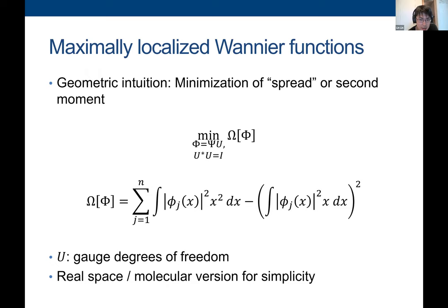Since this is an expert audience and there have been many wonderful talks in the past two days, I will directly start from the optimization problem. As we know, the maximally localized Wannier function optimizes a functional called the spread functional, denoted by omega. It is a function of the Wannier orbital phi, which is a unitary rotation of the bands psi.